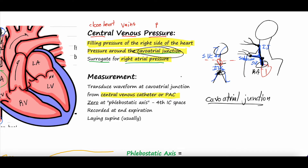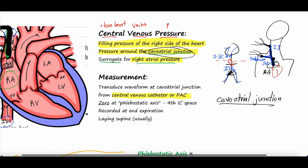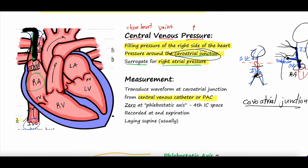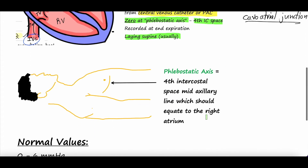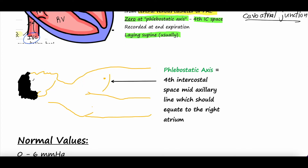Once you have the catheter in and want to measure CVP, you transduce a pressure off the catheter tip. But first, you must zero the catheter — this is really important. You have the patient lay flat — supine, flat on their back — and zero the catheter at what we call the phlebostatic axis, which is around the fourth intercostal space.